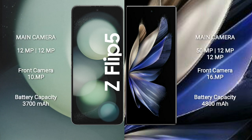Samsung Galaxy Z Flip 5 features a dual rear camera setup: 12MP plus 12MP, and a 10MP front camera. Vivo X Fold 2 comes with a triple rear camera setup: 50MP plus 12MP plus 12MP, and a 16MP front camera.